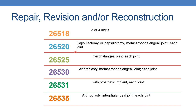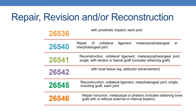Next is 26520: capsulectomy or capsulotomy, metacarpophalangeal joint, each. 26525: capsulotomy or capsulectomy of interphalangeal joint. Next is 26530: arthroplasty, metacarpophalangeal joint, each joint. Next is 26531: arthroplasty, metacarpophalangeal joint with prosthetic implant, each joint. Next is 26535: arthroplasty, interphalangeal joint, each joint. With prosthetic device, interphalangeal joint, it is given by 26536.